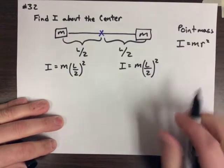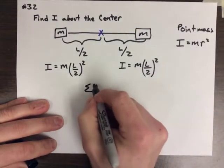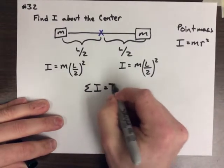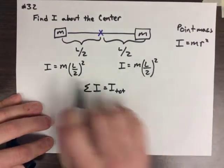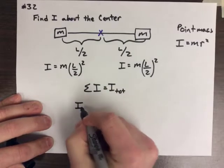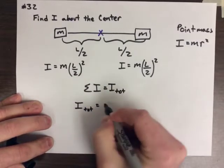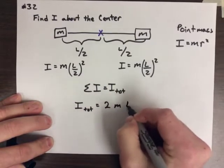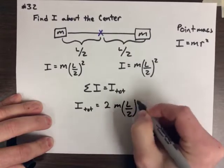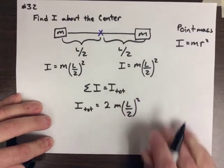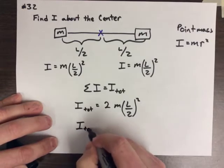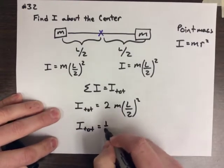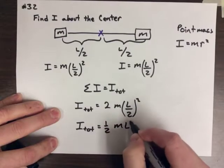Now, to find the total, I have to simply add together the I values to get the total moment of inertia of my multiple mass system. So, I add these two together, they're the same. So, I get I total equals 2 times m L over 2 quantity squared. And we can go ahead and then simplify that down a little bit. And I get I total equals one half m L squared.